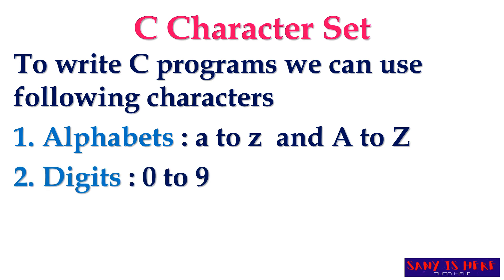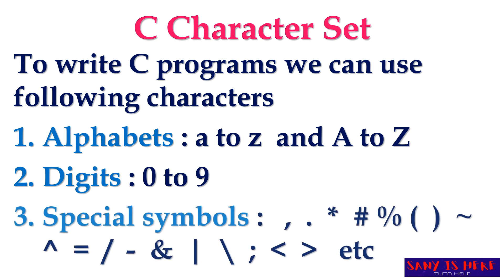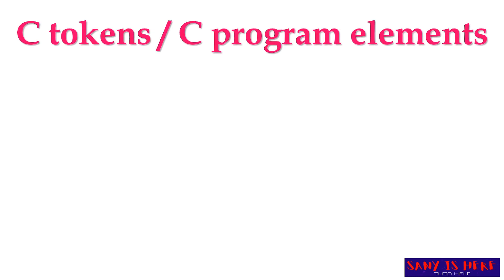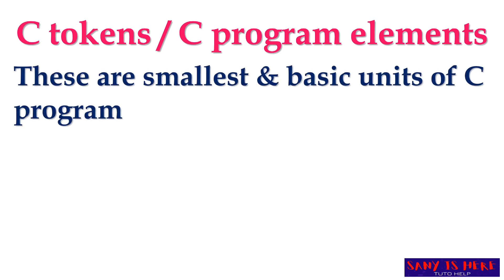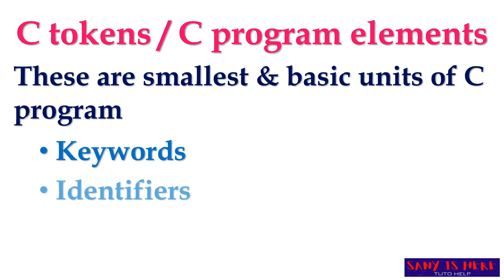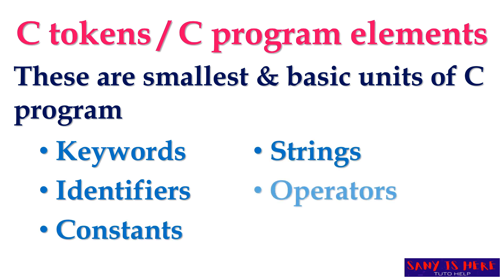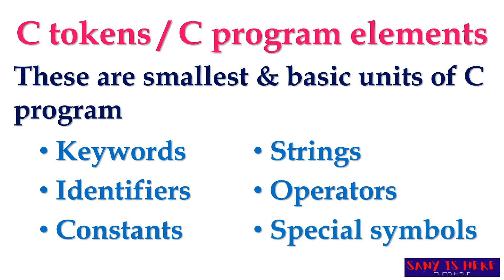We can also use different special symbols like comma, dot, star, and hash. There are different special symbols we can use in the program. These are the C character sets — with these we can write C programs. Now let us see what C tokens are. C tokens are the basic and smallest units of C programs. To write C programs we need the help of elements like keywords, identifiers, constants, strings, operators, and special symbols. With the help of these we can write programs.